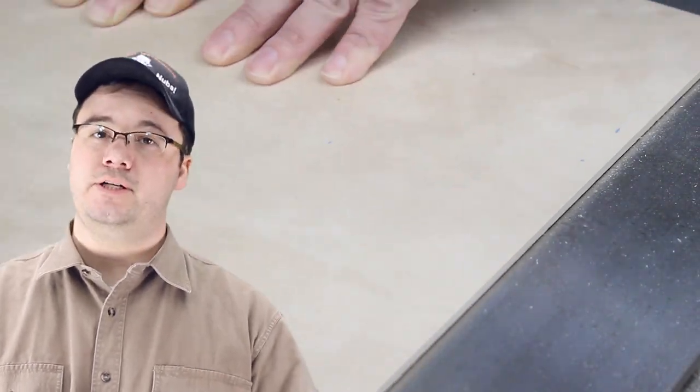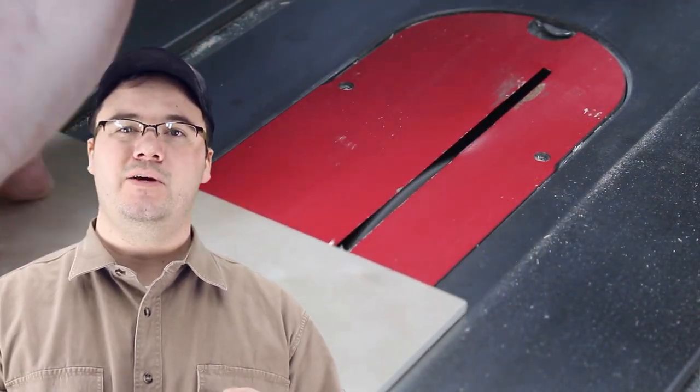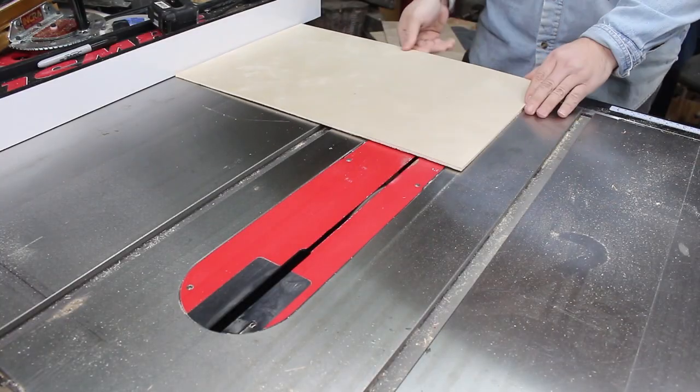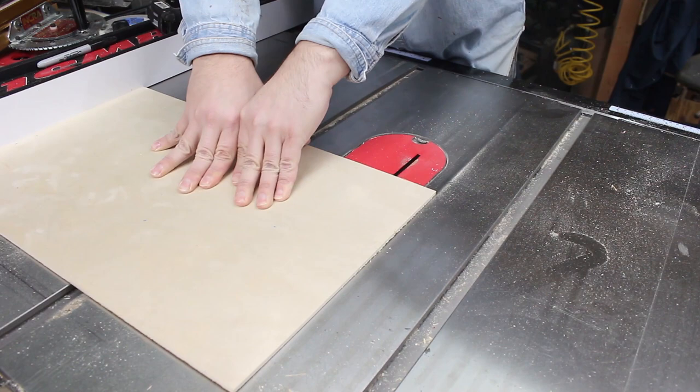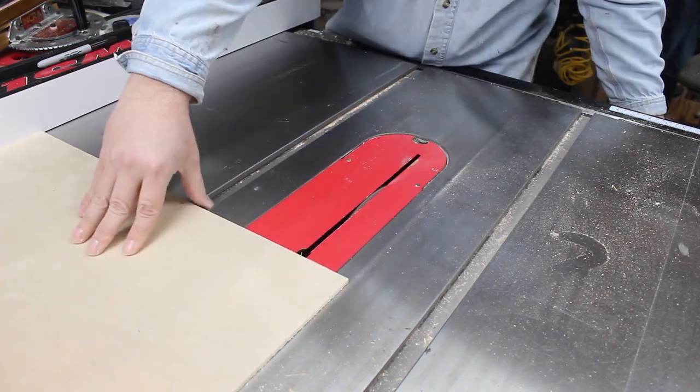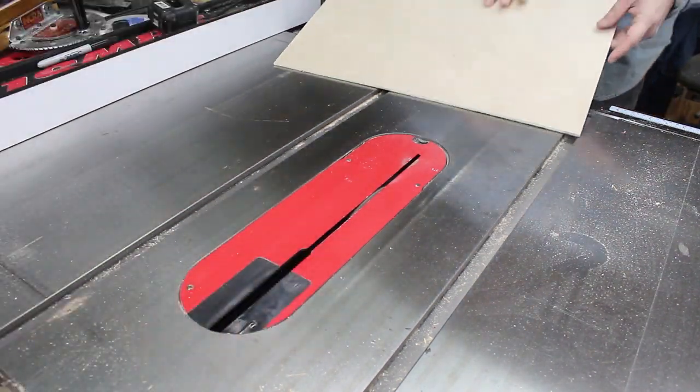Time to cut some dados. Now if your thin stock is exactly a quarter inch, you can use your router table for this. But since we resawed our stock, I'm betting it's not exactly a quarter inch. In fact mine is a little thinner than what my dado set will do. So I'm just going to have to run it in two kerfs with a saw blade.